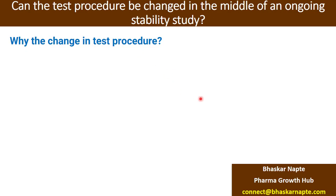Why the change in test procedure? Change is the only constant, and it is also applicable to our test procedures — that is what is called the life cycle management of the test procedure. One reason you may consider a change is to adopt new technologies. For example, you have a test procedure using UV spectroscopy from 20 years back, and you are thinking of shifting to a chromatography-based test procedure.